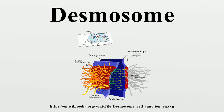A desmosome, also known as a macula adherens, is a cell structure specialized for cell-to-cell adhesion, a type of junctional complex. They are localized spot-like adhesions randomly arranged on the lateral sides of plasma membranes. Desmosomes help to resist shearing forces and are found in simple and stratified squamous epithelium. The intercellular space is very wide. Desmosomes are also found in muscle tissue where they bind muscle cells to one another.